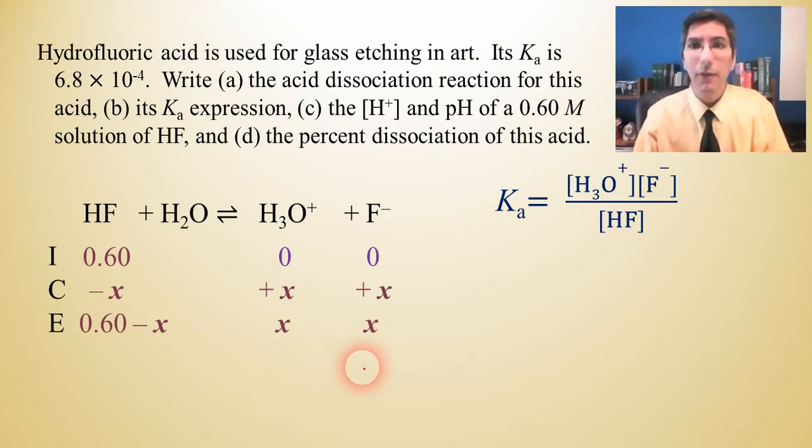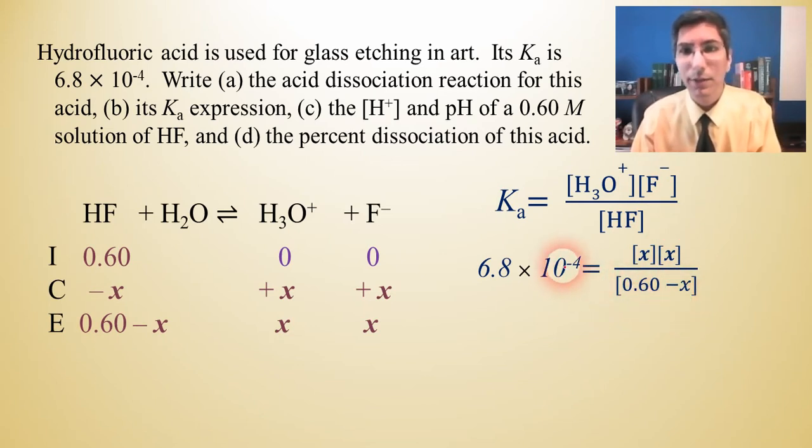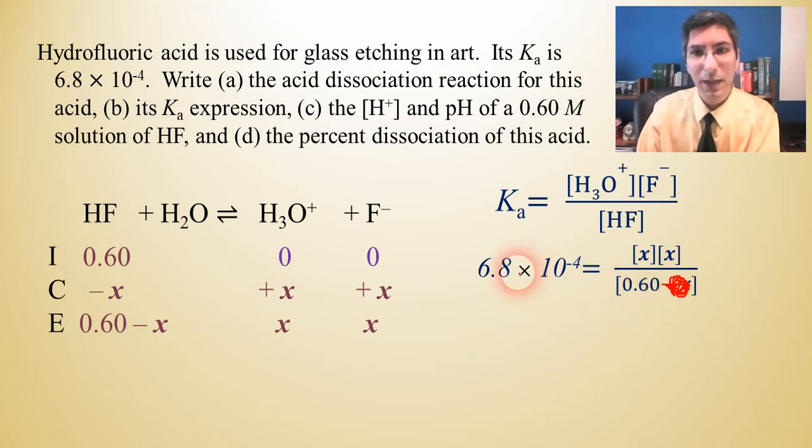Now we're just going to plug into Ka and solve for X. Now Ka we have is 6.8 times 10 to the negative fourth, so I plug that in there for Ka. For hydronium, it's X. For fluoride, that's X. And HF is 0.60-X. Now I noticed that this is a fairly small equilibrium constant, not as small as some of the others that we've worked with, but we're going to try to ignore that -X there so we can avoid using the quadratic formula. We really try to avoid that if we can. And so now we can cross multiply.